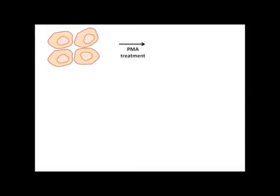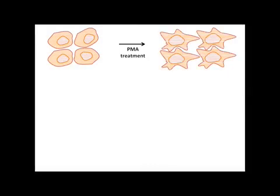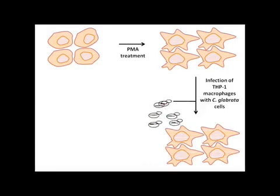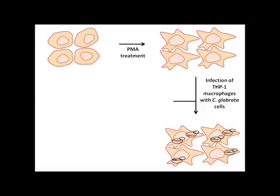To achieve this, THP1 monocytes are first treated with phorbol ester to differentiate them into macrophages. Next, THP1 macrophages are infected with Candida glabrata cells.